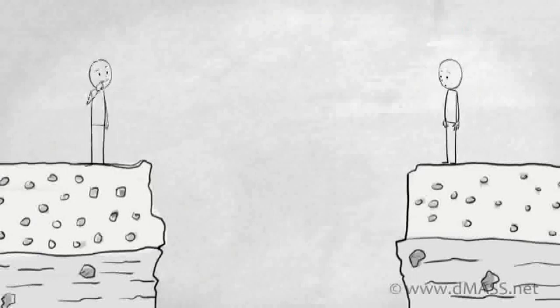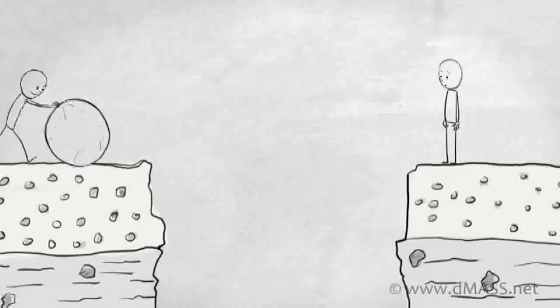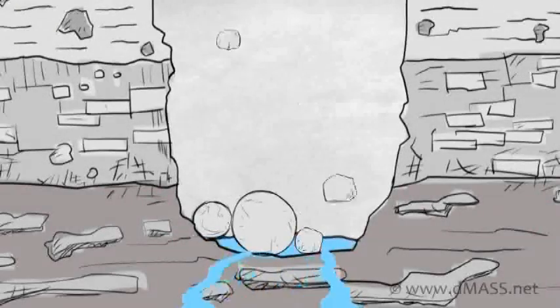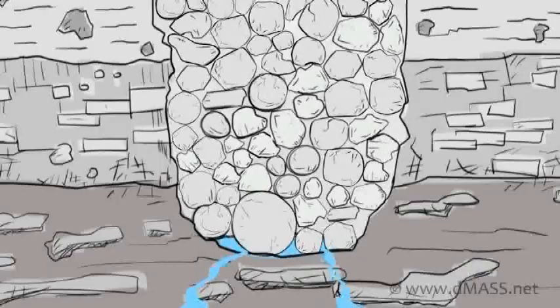So they tried to figure out what they could do, and some of them started to dig up rocks and throw them into the canyon. Eventually, the canyon completely filled up with rocks, and it became the first bridge.